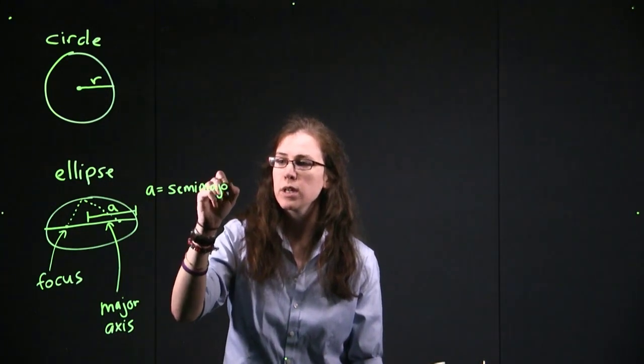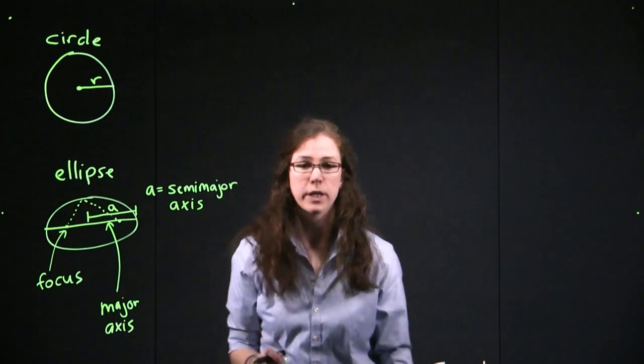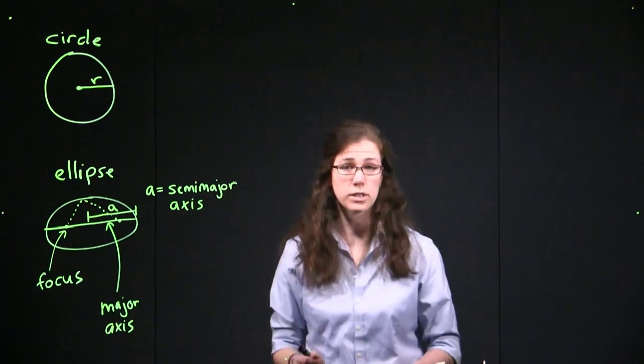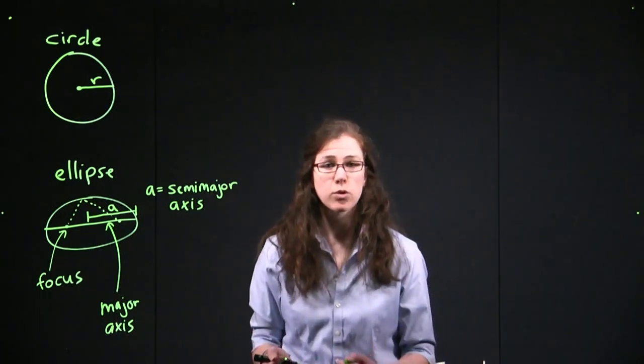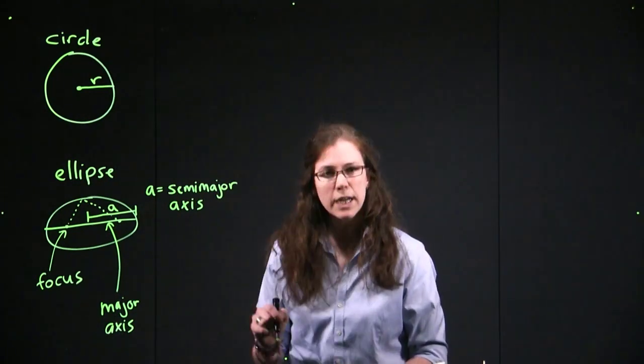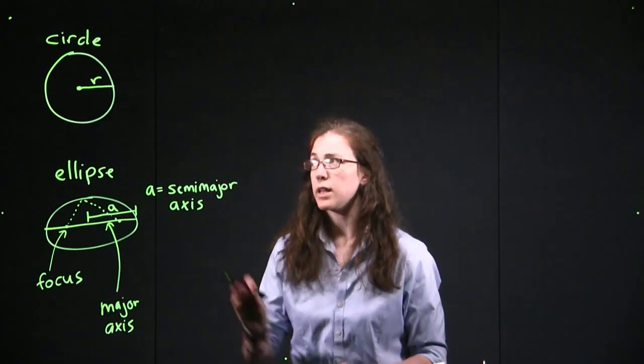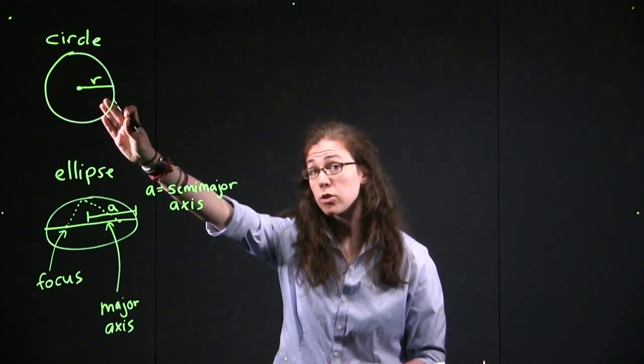If you look up the distance between a planet and our sun, it will often be told to you as a semi-major axis, telling us something that's kind of like the radius of that orbit, but isn't quite a radius, because those aren't quite circles.